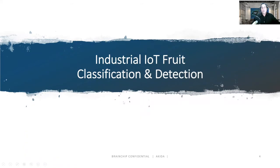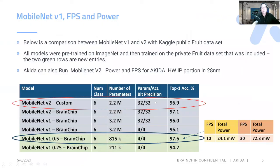The next demonstration we're going to be showing you is an industrial IoT fruit classification and detection. The key thing here is looking at the number of classes — six — with accuracy at 32-bit floating point of 96.9, and BrainChip's floating point accuracy of 97 using 32-bits. But we quantize down to four bits, four weights and activation, and instead of using MobileNet V2, we use MobileNet V1 to get better accuracy, lower power, and a lower number of parameters, which is really key for some of these edge devices sitting at the sensor.